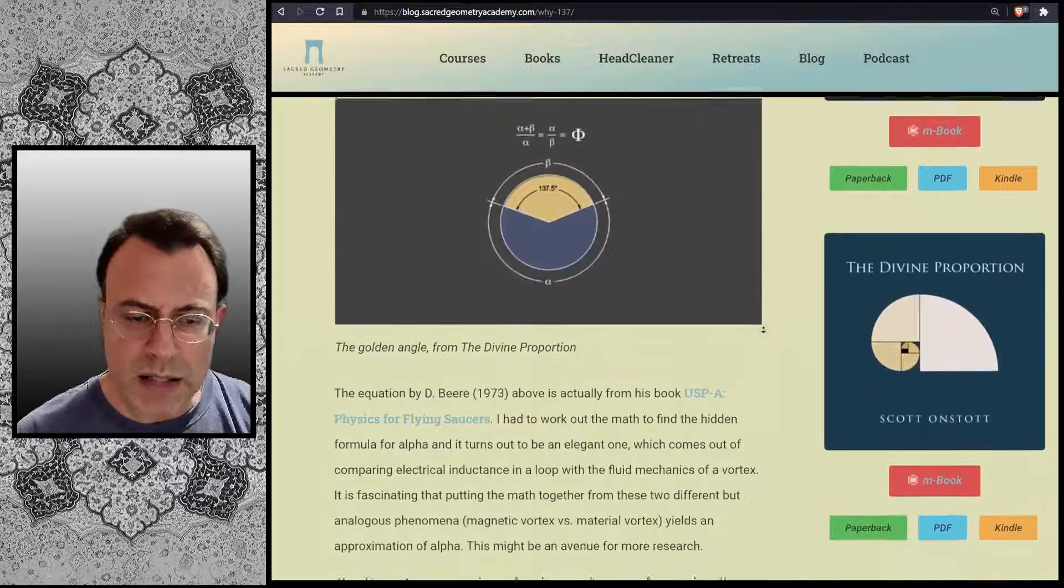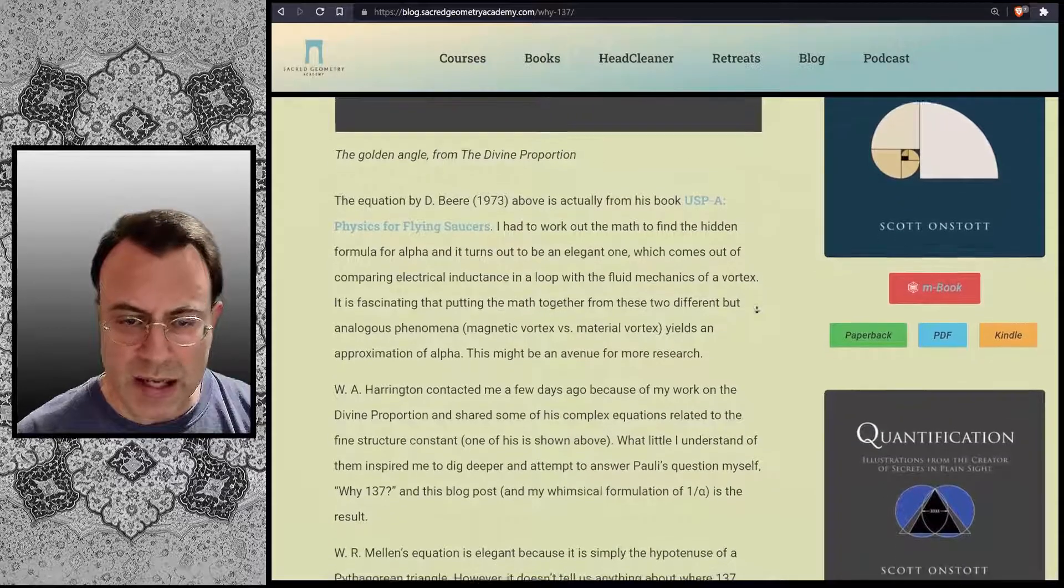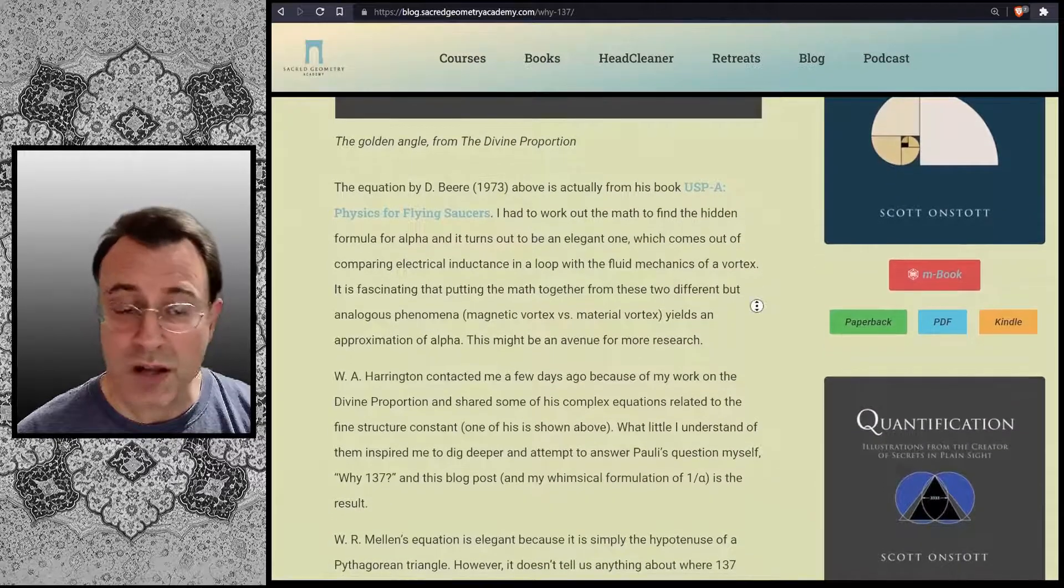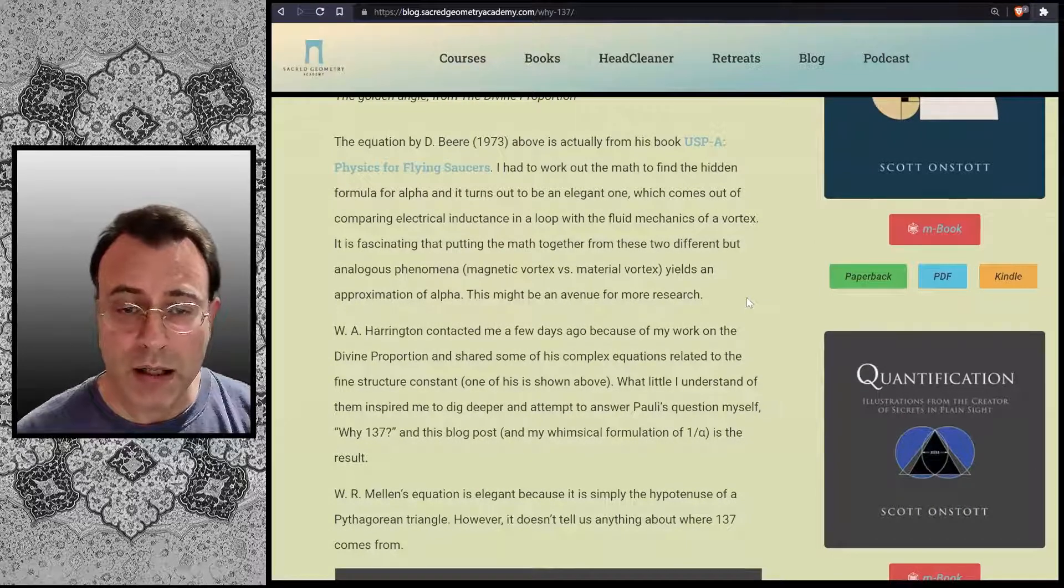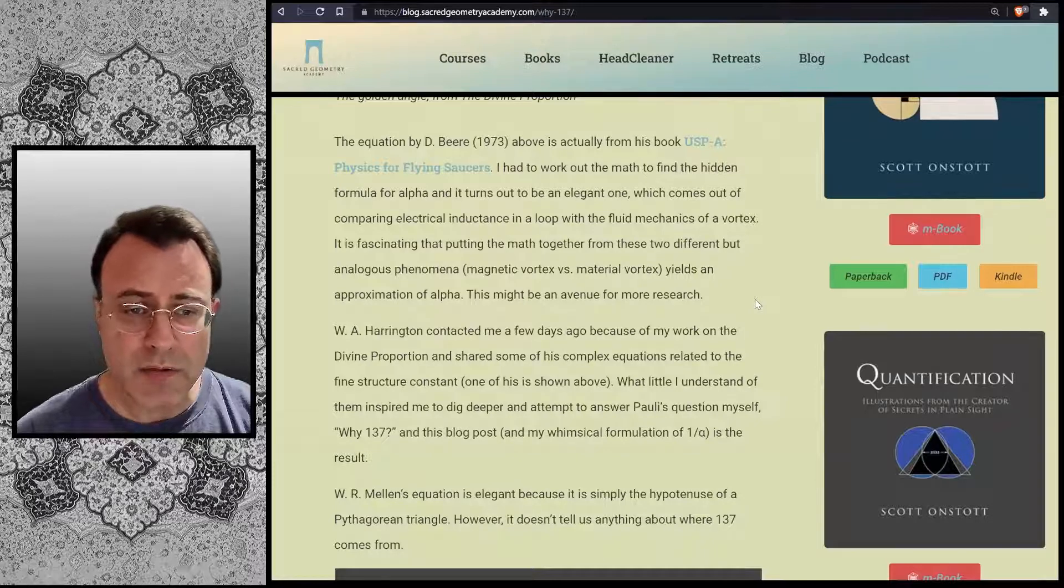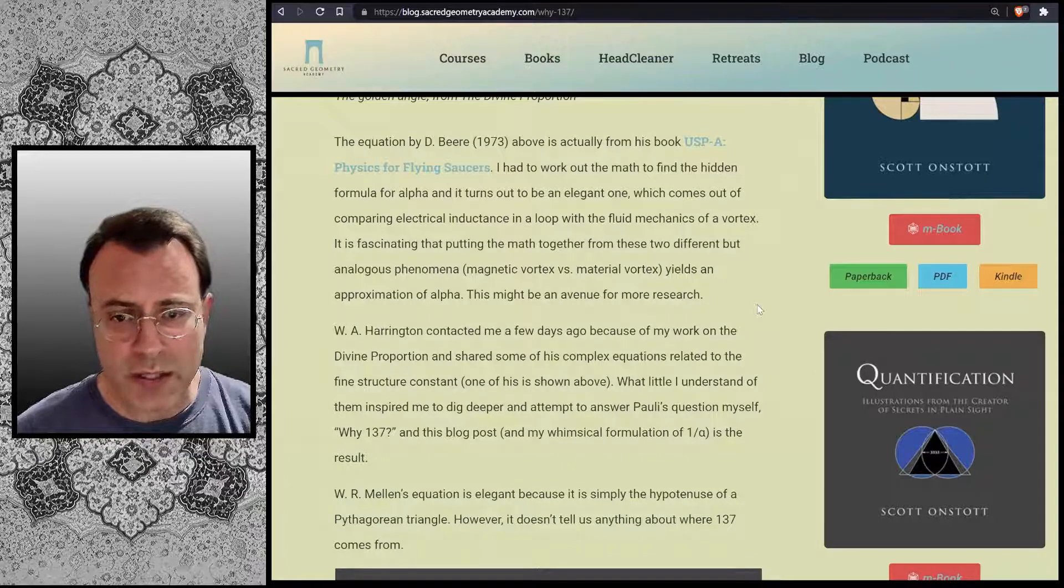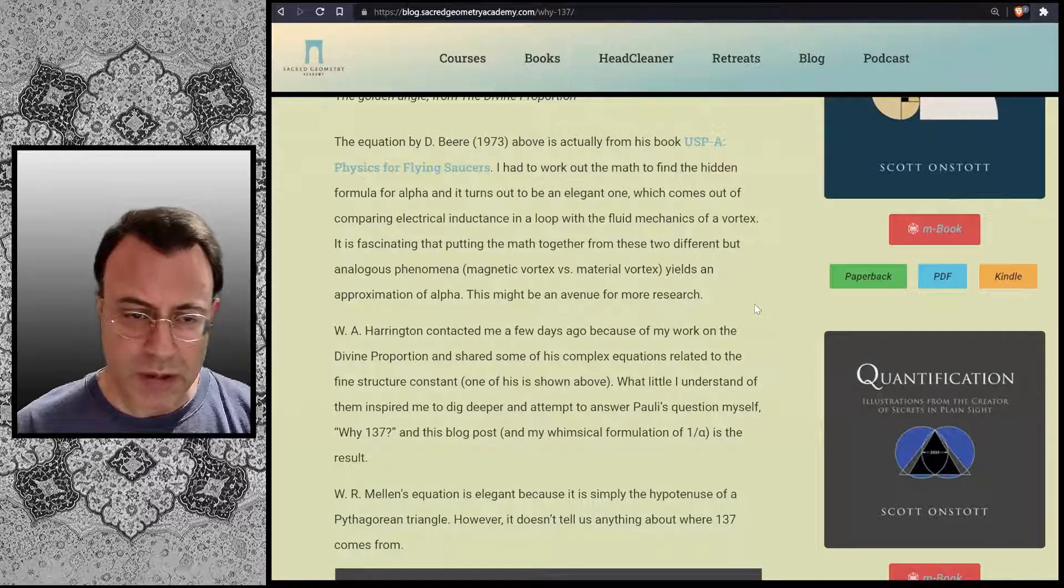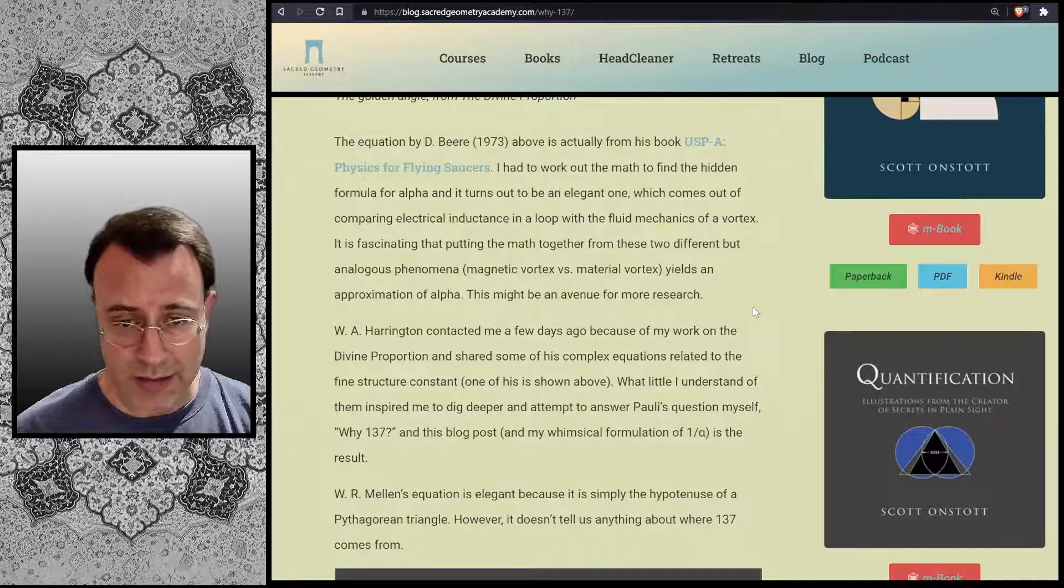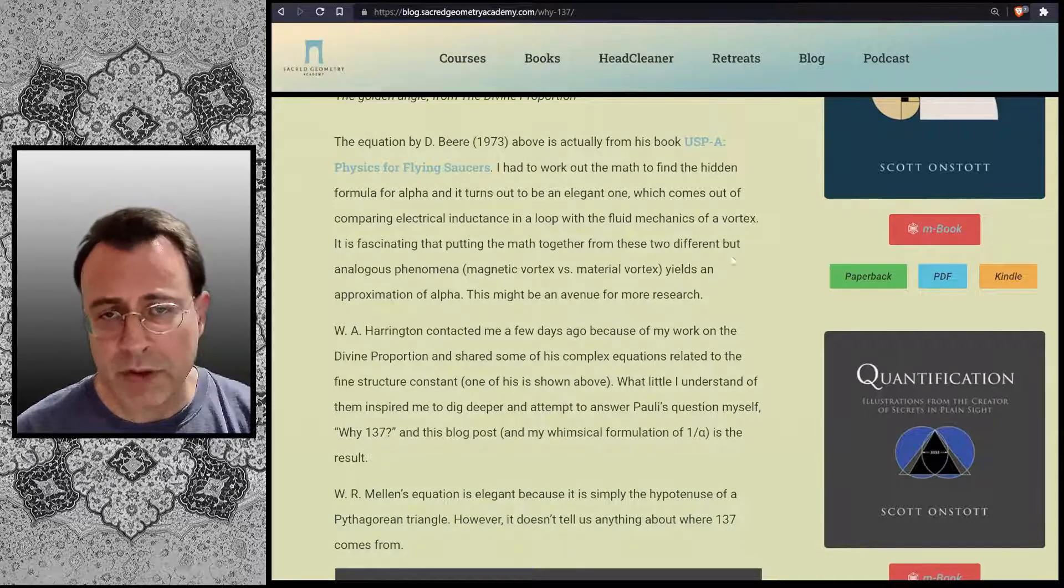The equation by D. Beer, from 1973, is actually from his book USP: A Physics for Flying Saucers. I had to work out the math to find the hidden formula for alpha, and it turns out to be an elegant one, which comes out of comparing electrical inductance in a loop with the fluid mechanics of a vortex. It is fascinating that putting the math together from these two different but analogous phenomena, magnetic vortex versus material vortex, yields an approximation of alpha. This might be an avenue for more research.